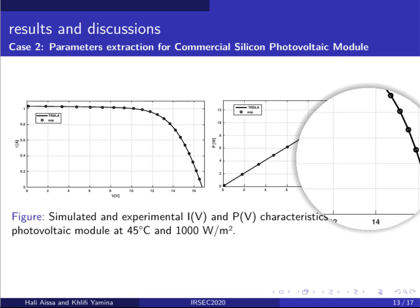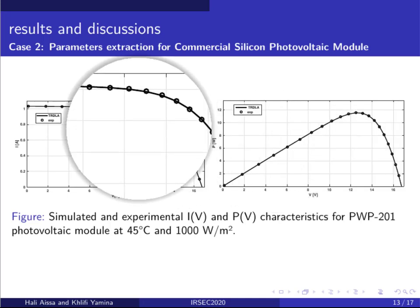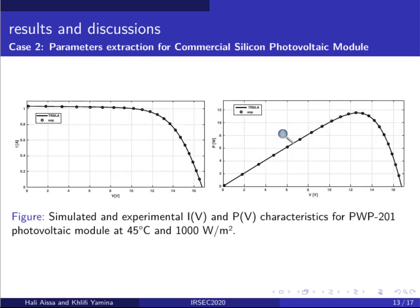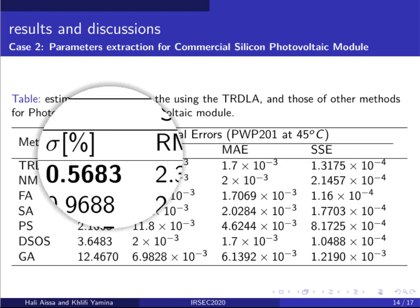These figures represent the comparison between experimental data and calculated current-voltage and power-voltage characteristics considering the optimized set of extracted parameters.